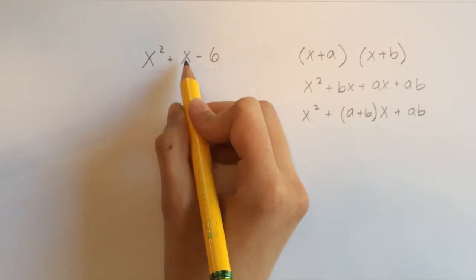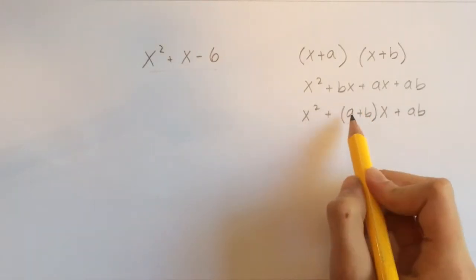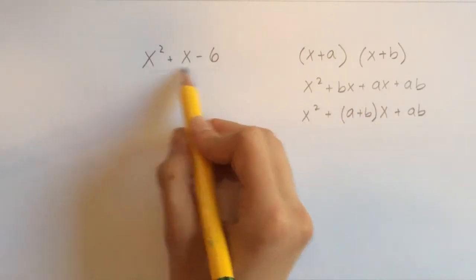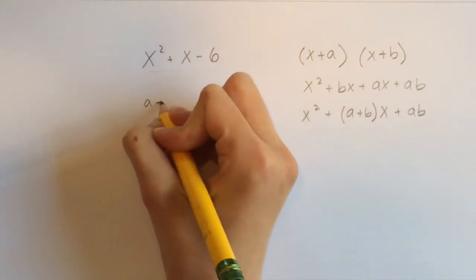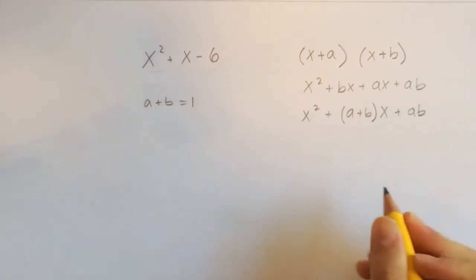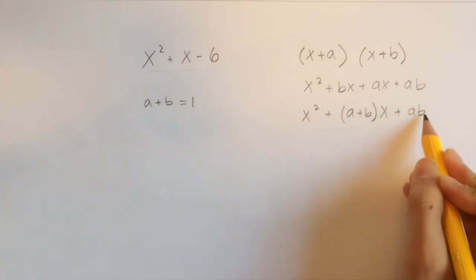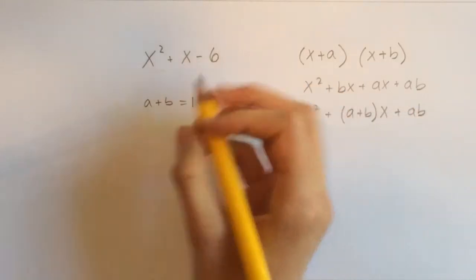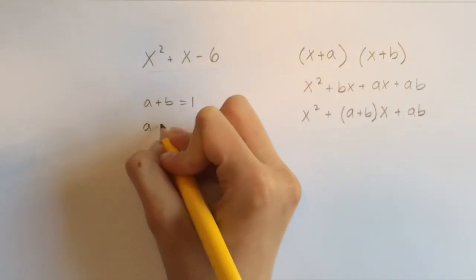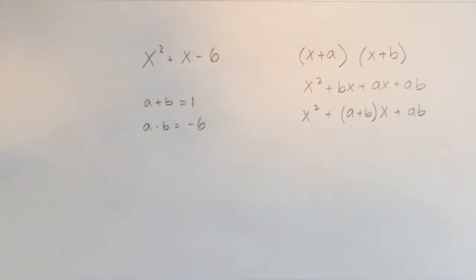Here we have a 1 times x. So we can say that a plus b, in this case, equals 1. So a plus b equals 1. And then here we have an a times b, which in this case is negative 6. So a times b equals negative 6.